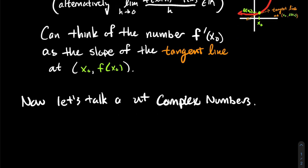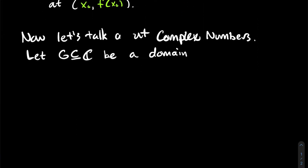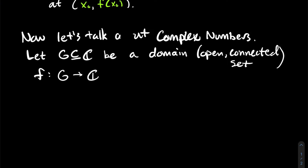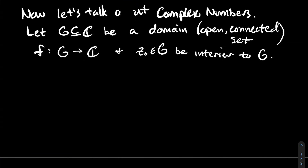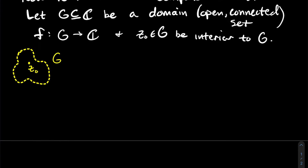Now let's talk about complex numbers. Let's take G to be some domain in the complex plane. A domain is an open connected set in the complex plane. Let's take a function whose domain is G and whose outputs are complex numbers, and let z₀ be a particular point in G. You could argue that all points of an open set are interior points — yes, so it's a little redundant — but we just want to confirm z₀ is somewhere in G.